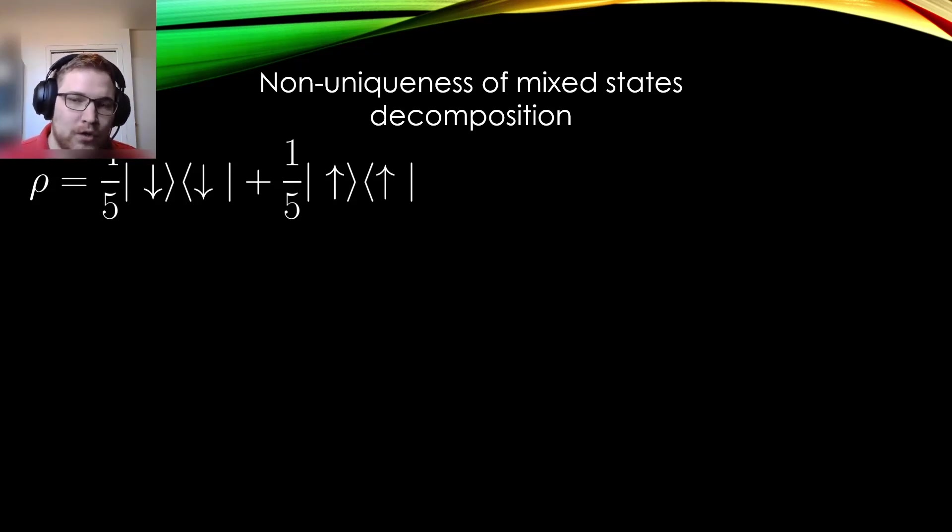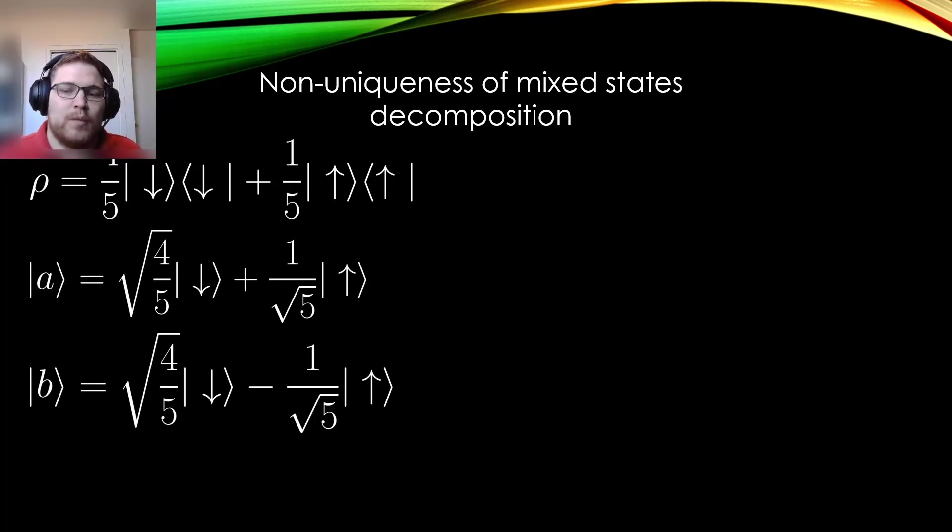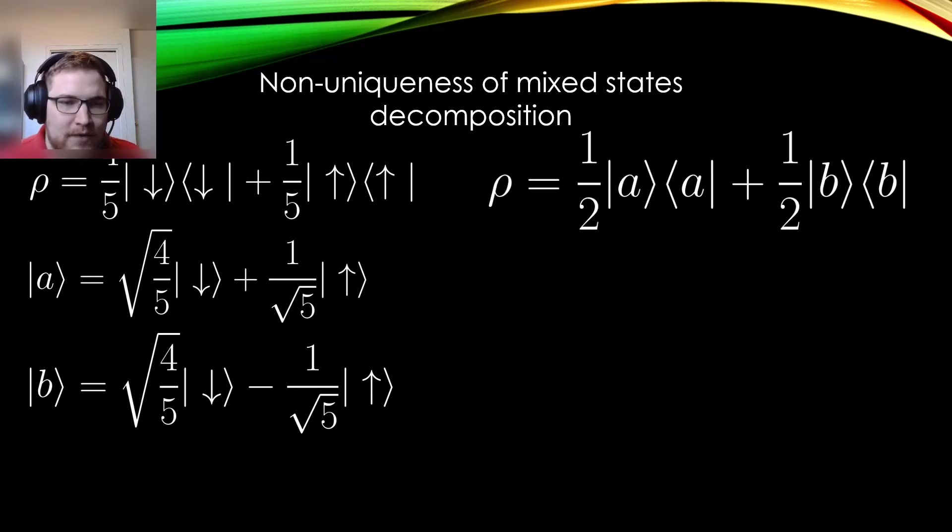Now, that is all well and good, but what if I prepared two other states? Let us define the two new state vectors, A and B, with the following probability amplitudes of being in the down or up state. Then, if we prepare these states with probability 1 half, we see that we get the same density matrix as before. Working this out, expanding the definitions of A and B, allows us to arrive at our original density matrix.